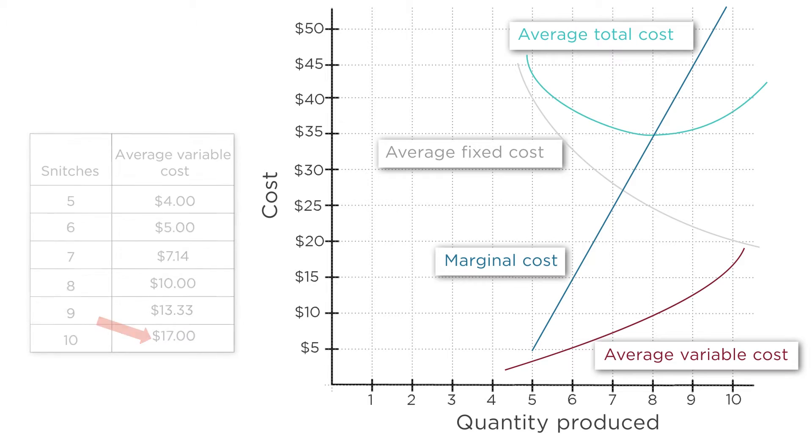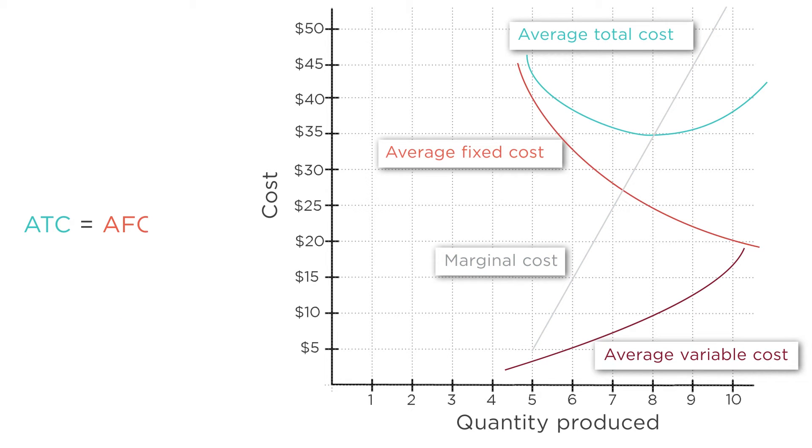The average total is just the sum of average fixed costs and average variable costs. Now the reason for the U-shaped average total cost starts to come into focus. On the one hand, the more production, the more units across which to spread fixed costs. Average fixed costs fall, first quickly, then more slowly.